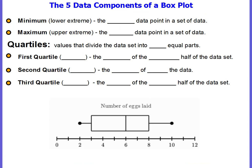These are the five components of a box plot. As we're going through, make sure you fill in your notes. You will also need to label the box plot example at the bottom. The first data component is the minimum, also called the lower extreme. This is the smallest data point in a set of data.